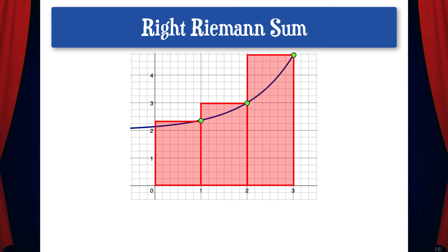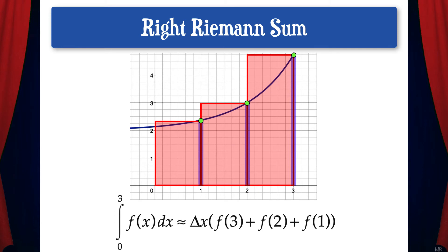We can also have right Riemann sums, where the height of each rectangle is determined from the right. In this case, the definite integral from 0 to 3 is approximately equal to delta x times the quantity of f of 3 plus f of 2 plus f of 1. Remember, delta x is the base of each rectangle and the function values are the heights of each rectangle.